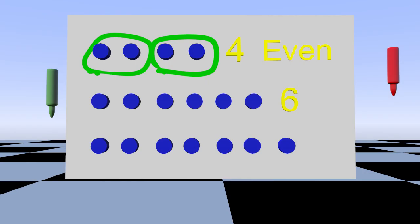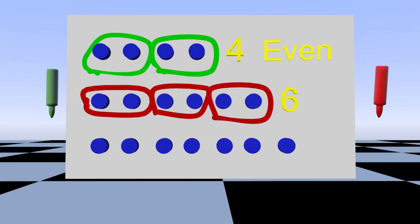Let's put these into pairs and figure out if this is going to be even or odd. Let's circle these two and these two and these two. Look, if you said even then you are right because they can all be put into pairs. Great job. There are six magnets here that can be put into pairs which make six an even number.